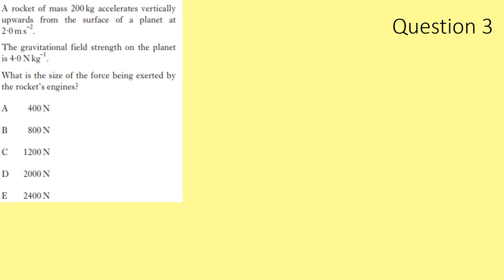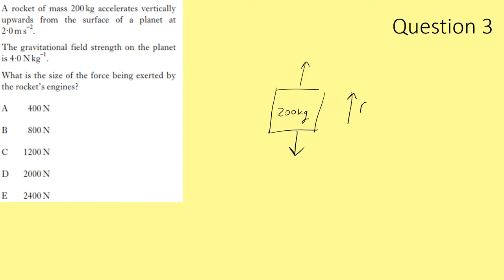Question 3. A rocket of mass 200 kg accelerates vertically upwards from the surface of a planet at 2 m/s². The gravitational field strength is 4 N/kg. Looking at a free body diagram: the unbalanced force is F = ma = 200×2 = 400 N. The downward weight force is W = mg = 200×4 = 800 N.